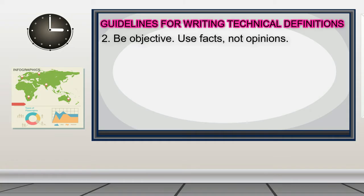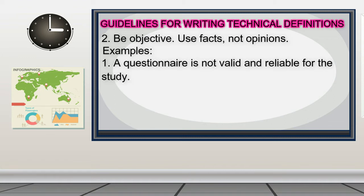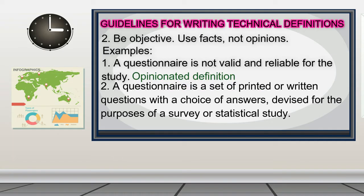Number 2: Be objective — use facts, not opinions. For example, 'A questionnaire is not valid and reliable for the study' is an opinionated definition. A factual definition is: 'A questionnaire is a set of printed or written questions with a choice of answers devised for the purpose of a survey or statistical study.'